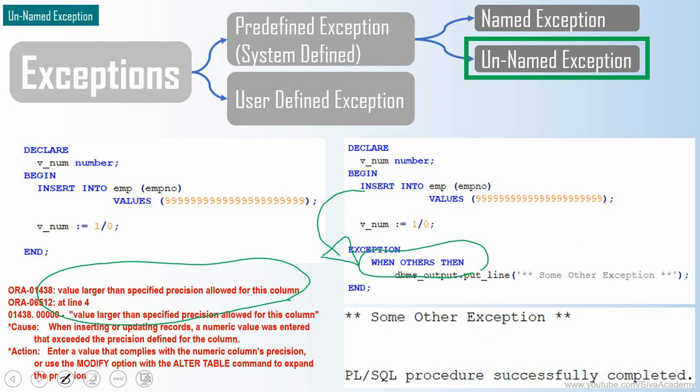But if you want to handle this exception with a name, or handle it separately, there is an option available in PL/SQL to provide a name for an unnamed exception. To give a name to an unnamed exception, we use PRAGMA EXCEPTION_INIT.